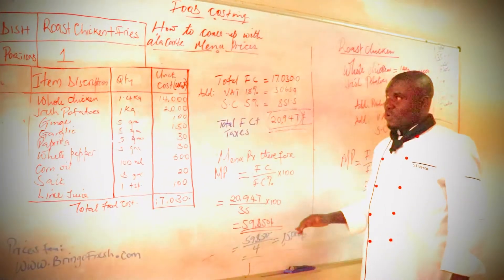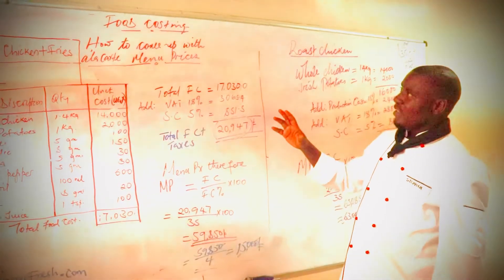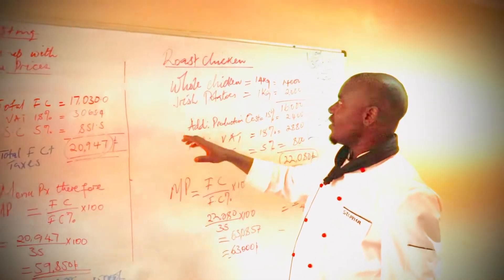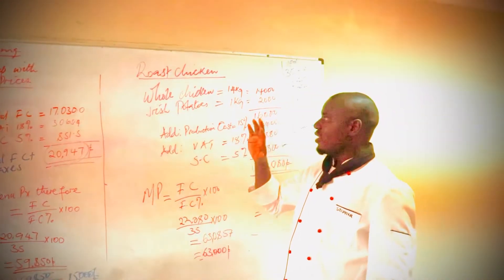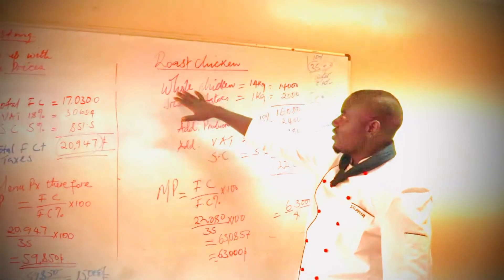So there is another simpler way for the same methodology, getting to the same menu price, but at this level now we are using the simplest method. We only get the whole ingredients which are needed, which is our whole roast chicken, which is at 14,000.